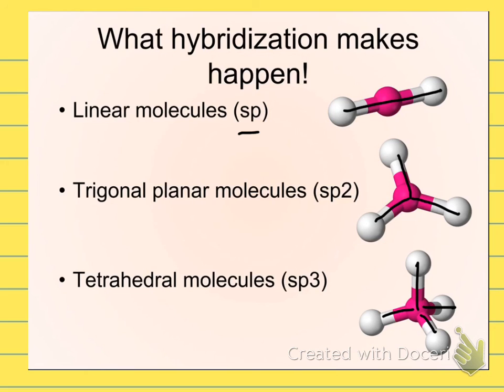What does hybridization allow for? Well, a range of geometries that wouldn't otherwise be possible. It also allows for atoms to bond to the fullest possible ability. For instance, carbon bonding to four things instead of just two. And that, frankly, makes a lot of our world possible.